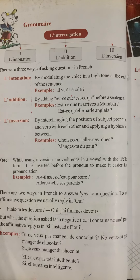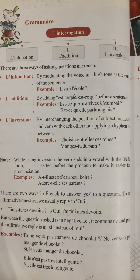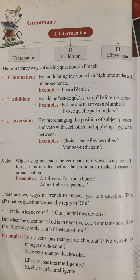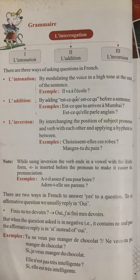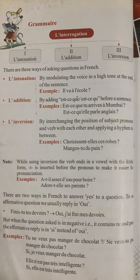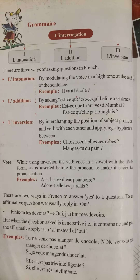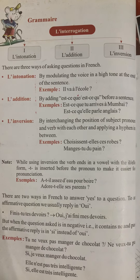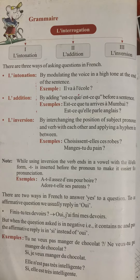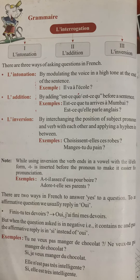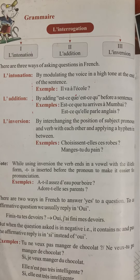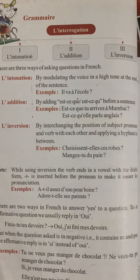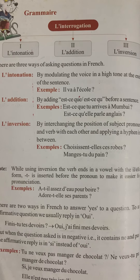Second form: est-ce que. By adding 'est-ce que' / 'est-ce qu'' before a sentence, we make the second form of interrogation. Example: 'Est-ce que tu arrives à Mumbai?' — we have added est-ce que before the sentence and added a question mark at the end, meaning 'Are you going to Mumbai?'